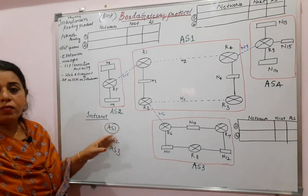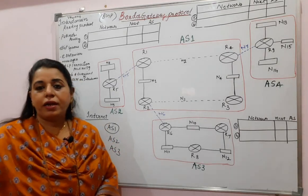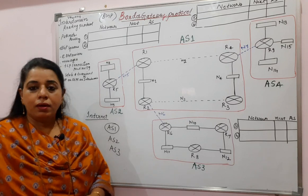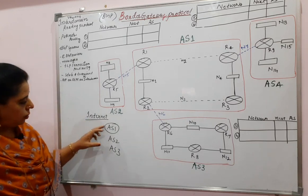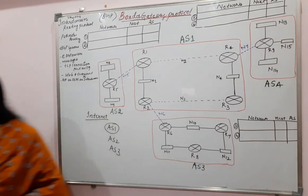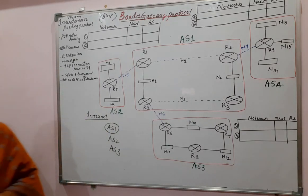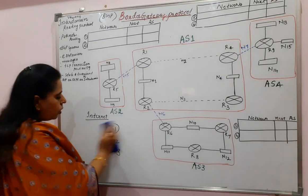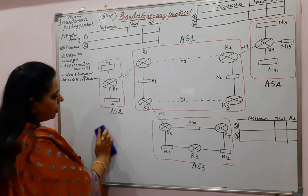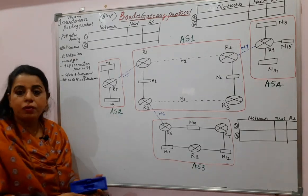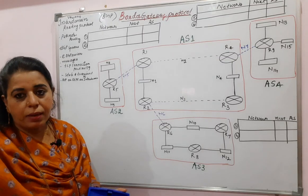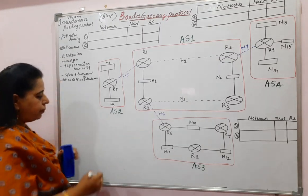Each autonomous system will have smaller networks within it. Now, to route the packets between these autonomous systems, this is where the Border Gateway routing protocol comes into picture.